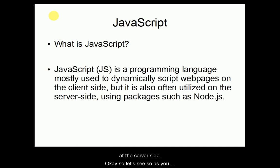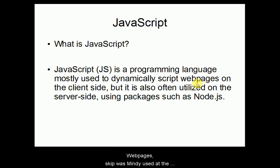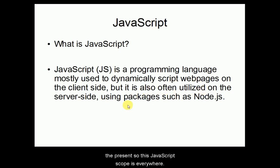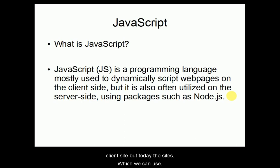JavaScript is a programming language mostly used to dynamically script web pages. So dynamic web pages can be created with JavaScript, which means on the client side — in the browsers. Back in the early days, JavaScript was mainly used at the client side, but it is also often utilized on the server side using packages such as Node.js. So today JavaScript can be used in both the front end and back end.